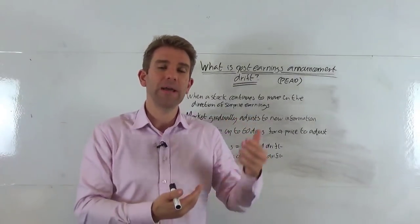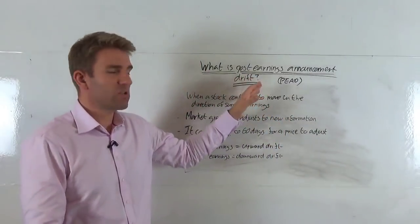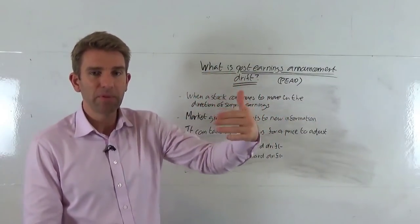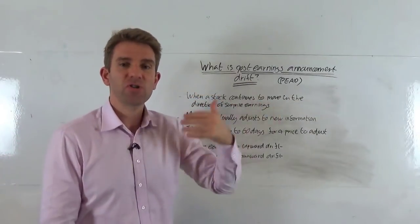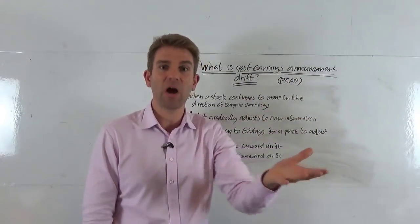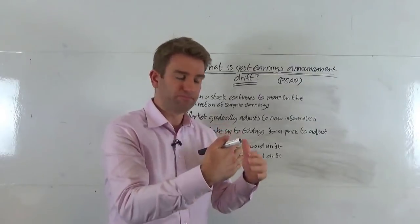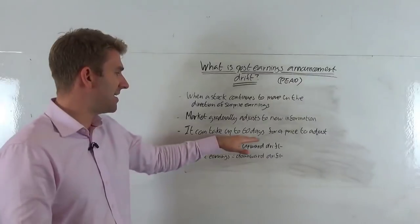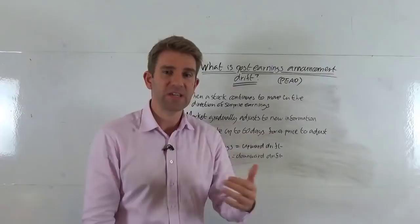Okay, and often we get what's called this post earnings announcement drift. So when we have a positive earnings announcement, the price will gap up, the price will close at highs, but then it will gradually adjust to the new information and will continue to drift in the direction of the earnings announcement, i.e. bullish to the upside. So we don't just get an immediate gap and move and that's the reprice. We get up to 60 days the price is adjusting.